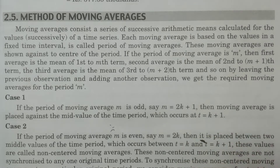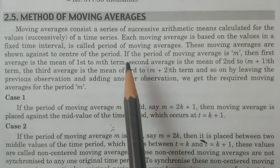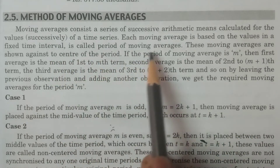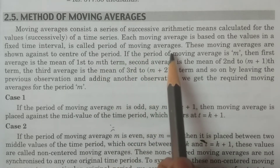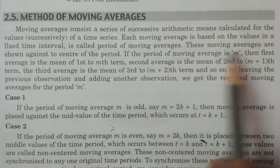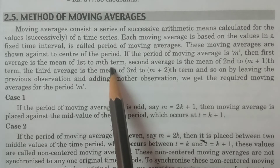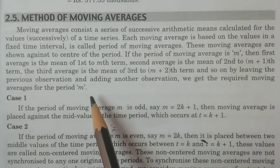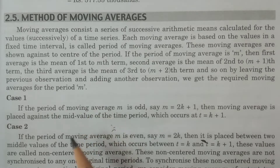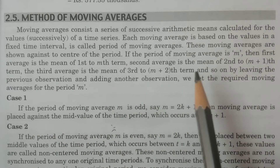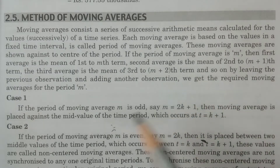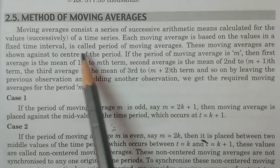Moving averages are to be calculated for a fixed time period — for example, five years or four years. That fixed duration is the period of the moving averages. These moving averages are shown against the center of the period. For example, for five years, the center period is the third year, so you place the moving average against the third year.